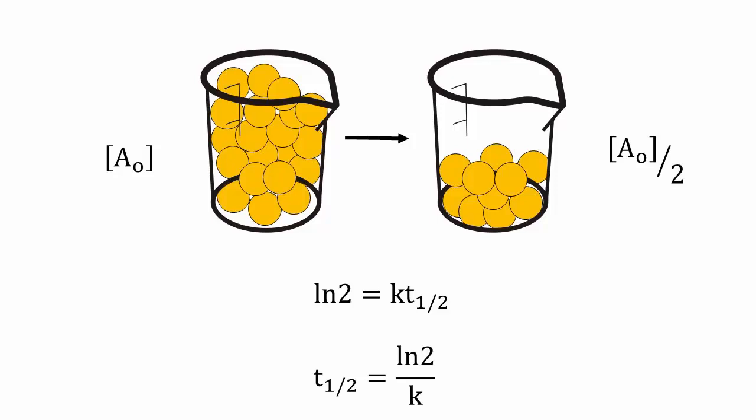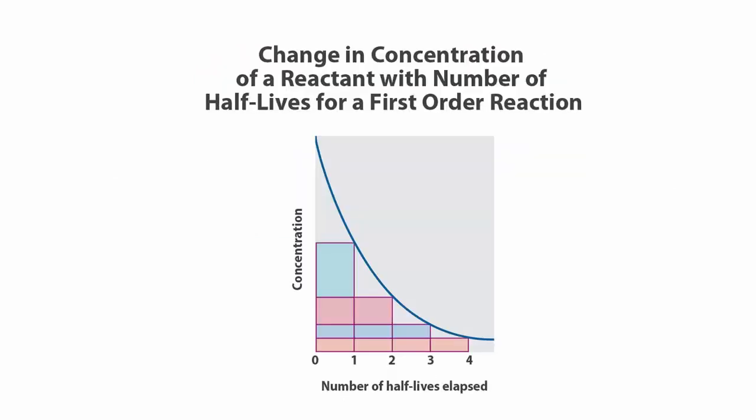This is important, as it means that the half-life of a first-order reaction does not depend on the initial concentration. This is not the case for any other order of reaction. Therefore, the time required to go from 100% to 50%, the initial value, or from 50% to 25%, or from 25% to 12.5%, are all one and the same when dealing with a first-order reaction.